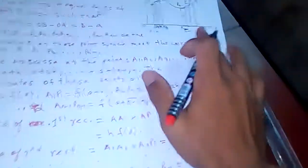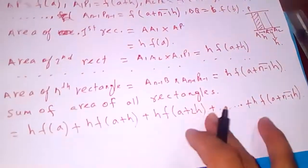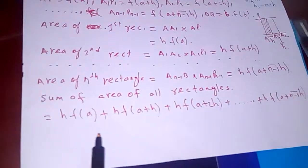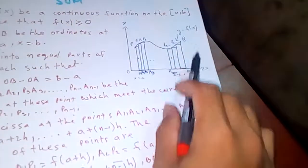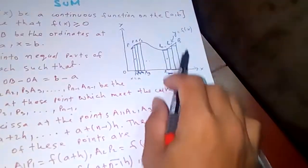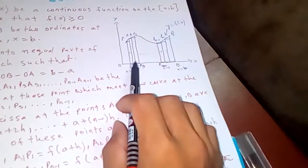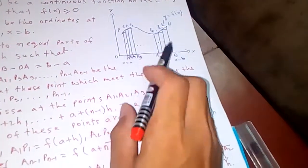This sum of all the areas of the rectangles is approximately equal to the area of the region ABqB. When you sum out all the areas of the rectangles, you get the area of ABqB.